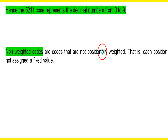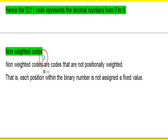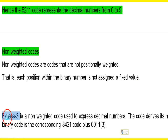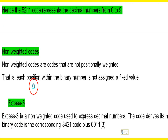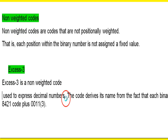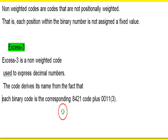Now, what are the non-weighted codes? The XS3 code is a non-weighted example. Let's go to the binaries.